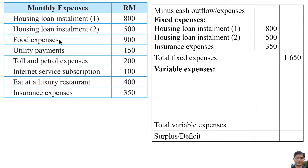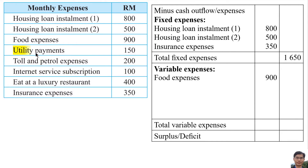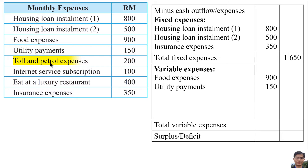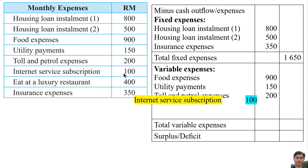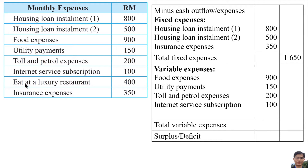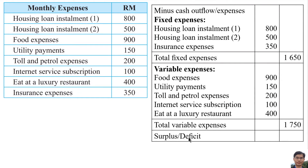Variable expenses: Food expenses are RM900, utility payments are RM150, toll and petrol expenses are RM200, internet service subscription is RM100, and eating at a luxury restaurant is RM400. The total variable expenses is the sum of these amounts, which is RM1,750, written on the right side.